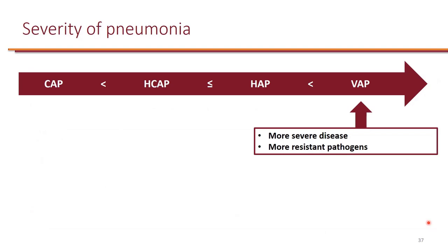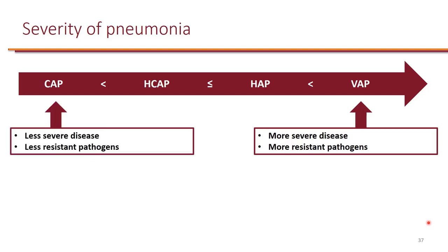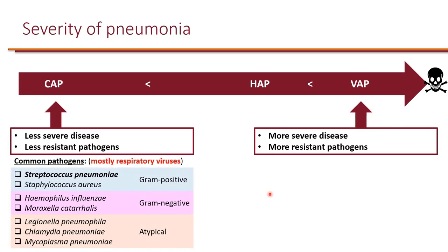At this point, you should know that VAP is a more severe type of pneumonia and is associated with more resistant pathogens, and CAP, or community-acquired pneumonia, is a less severe pneumonia caused by less resistant pathogens. Now, let's take a look at the common causes of community-acquired pneumonia. Viruses, by far, are the most common causes of CAP. However, when it comes to bacterial causes of community-acquired pneumonia,